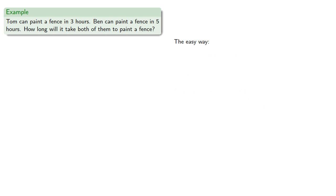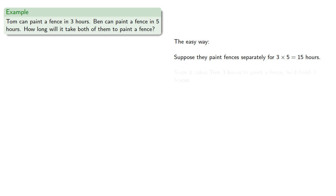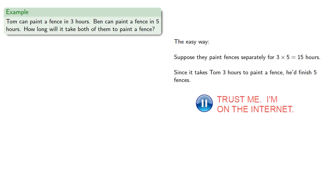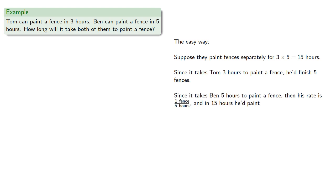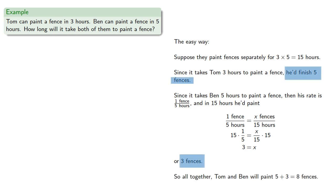There's also an easy way. Notice that their times are three hours and five hours, so suppose they paint fences separately for three times five — fifteen hours. Since it takes Tom three hours to paint a fence, he'd finish five fences. Since it takes Ben five hours to paint a fence, in fifteen hours he'd paint three fences. So altogether, Tom and Ben will paint five plus three — eight fences — and so their combined rate is eight fences in fifteen hours.